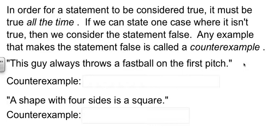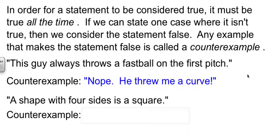For example, sitting in the dugout, batters come in and say, man, this guy always throws a fastball on the first pitch. Well, the counterexample was, no, he threw me a curve. That would be a counterexample. That would be a case where it wasn't true.